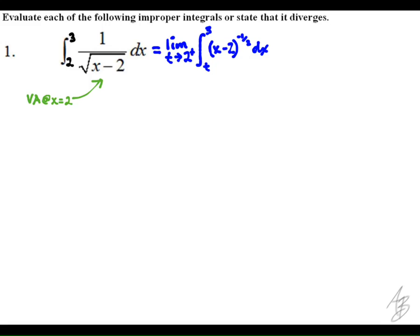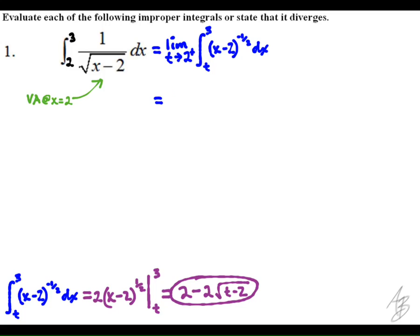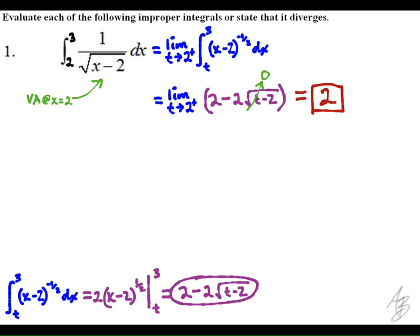I rewrote the integrand as (x minus 2) to the negative one-half power, which allows me to evaluate the antiderivative easily using the power rule. Going down to the bottom of the screen, we evaluate that definite integral — ignoring the limit for now — and find the value depending on t: 2 minus 2 times the square root of (t minus 2). Evaluating the limit as t approaches 2 from the right gives us 2.